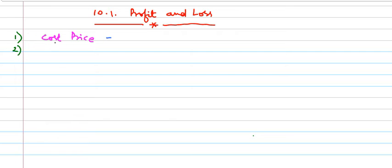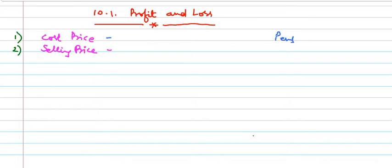The second term is selling price. Selling price means the price at which we have sold the product. For example, I have a packet of pens and I bought those pens for 100 rupees, and I sold them for 120 rupees. So 100 rupees is called the cost price and 120 rupees is called the selling price.